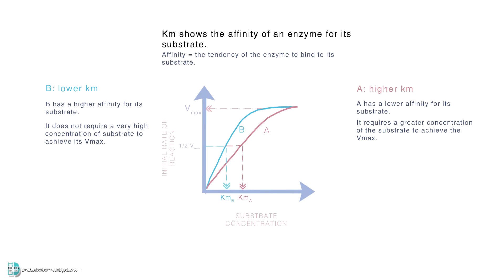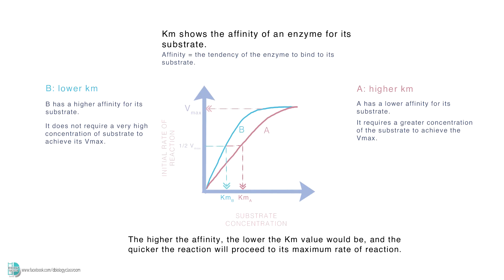In short, the higher the affinity, the lower the Km value would be, and the quicker the reaction will proceed to its maximum rate of reaction.